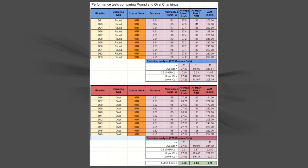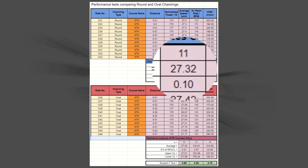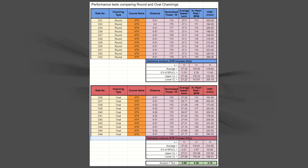For the round chainrings, my average speed was 27.32 km/h. And for the oval chainrings, 27.30 km/h — so almost identical. Superficially, when looking at the average heart rate and the VAM, the differences between the two chainrings again are small. However, are the differences statistically significant?